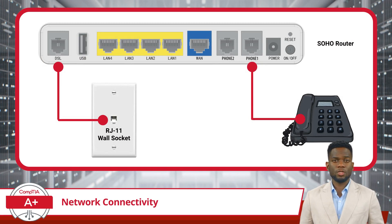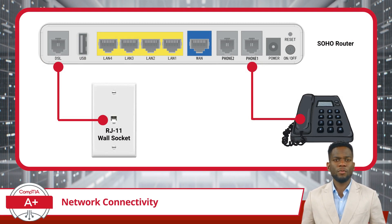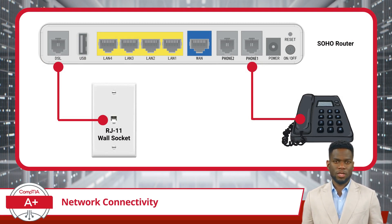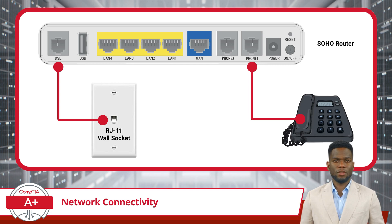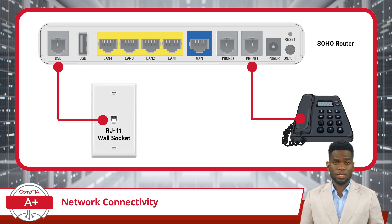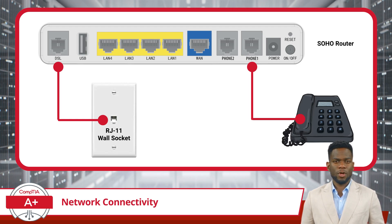Once you have a properly constructed phone cable, it is time to make some connections. For setting up a DSL, or digital subscriber line connection, the phone cable provides a link between the RJ11 wall socket port and the DSL port on the router. Additionally, to connect a traditional landline phone to the router for voice communication, another phone cable is used to bridge the phone port on the router to the RJ11 port on the landline phone.